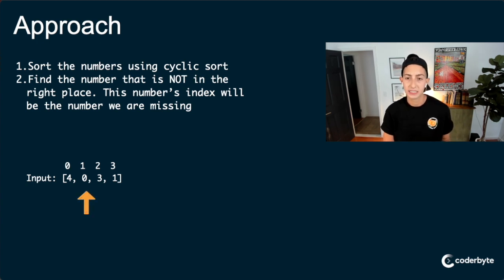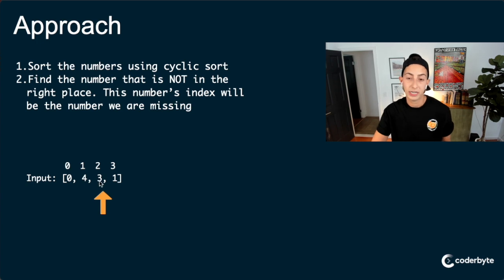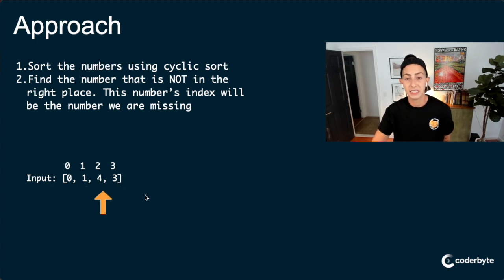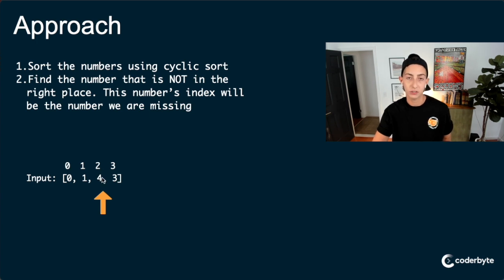Now we're at 3. What's in the 3 spot? 1. So let's swap 3 and 1. Now we don't increment i because we still have a 1 that's out of place — 1 does not equal the index where it's at. So we want to swap 1 and 4 finally. And now everything is in its place except for the 4. Because the only swap we could possibly make for 4 would be if we had a 2 to put in its place, but we don't. And we know that 2 is missing because 4 ends up in the remaining index of 2. So that's the approach.